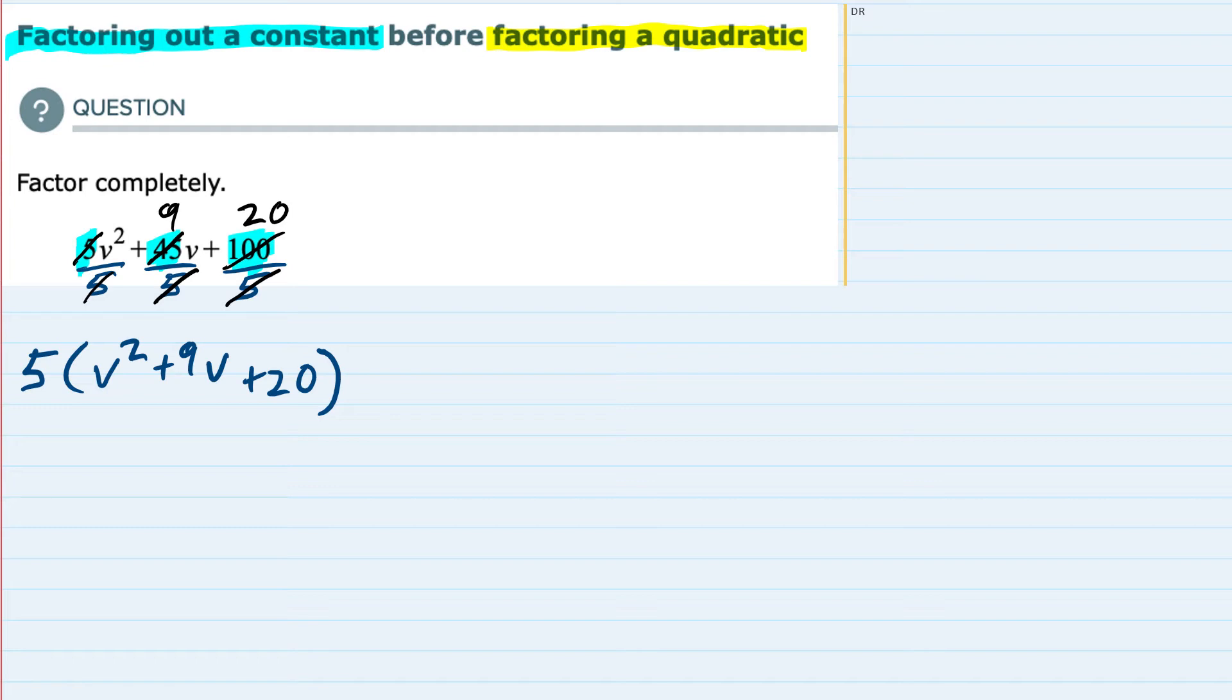When I multiply 5 times v, I do get the original 5v². And when I multiply 5 times 9v, 5 times 9 is 45. The v is still there.